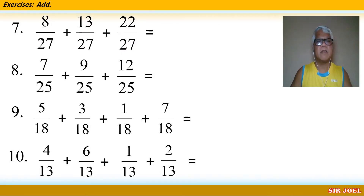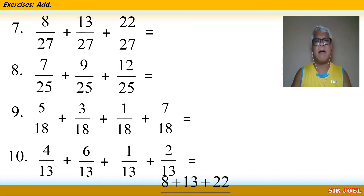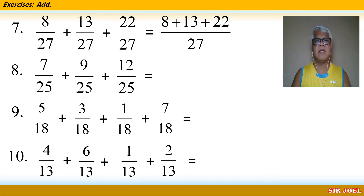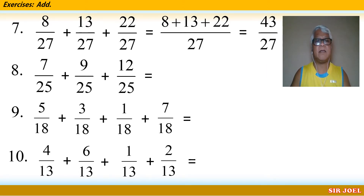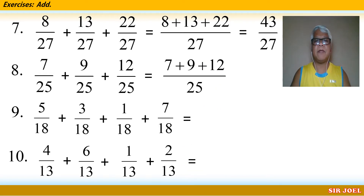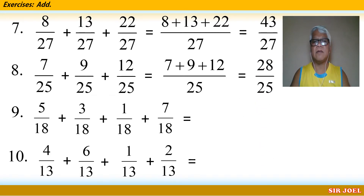Then add 6 and 5 to get 11 over 11. Number 7: 8 over 27 plus 13 over 27 plus 22 over 27. Copy the denominator 27, then get the sum of 8, 13, and 22 to get 43 over 27. Number 8: 7 over 25 plus 9 over 25 plus 12 over 25. Copy the denominator 25, then add 7, 9, and 12 to get 28 over 25.